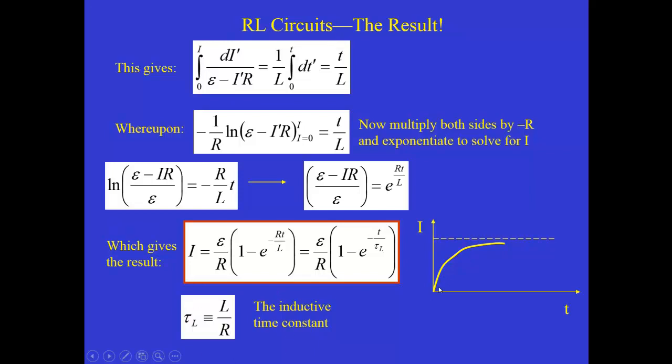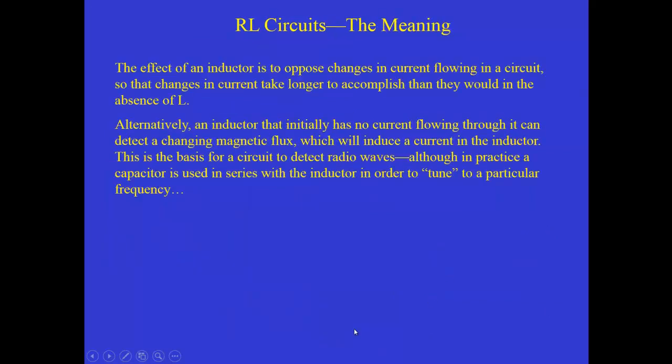And it does so over a period of time that is characterized by this inductive time constant. So the important point here is that with the inductor in the circuit, the current does not rise from zero to its final value instantaneously, but takes a certain gradual amount of time to do that. So the inductor then opposes changes in the current flowing through the circuit. So these changes take longer than they would if there were no inductor.